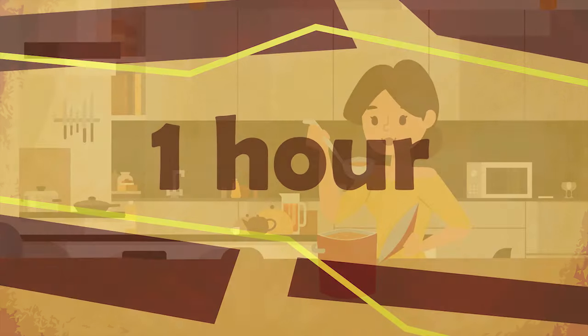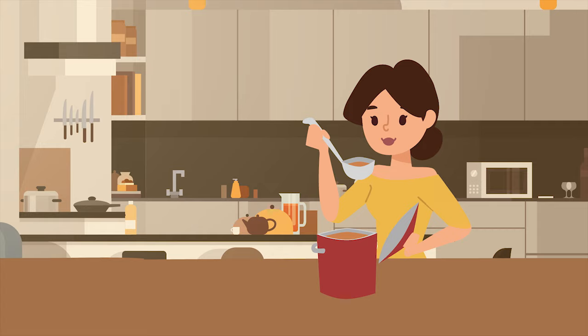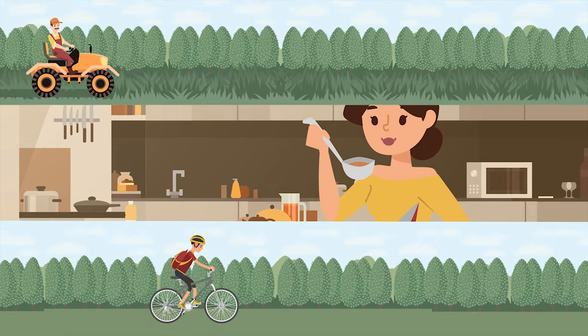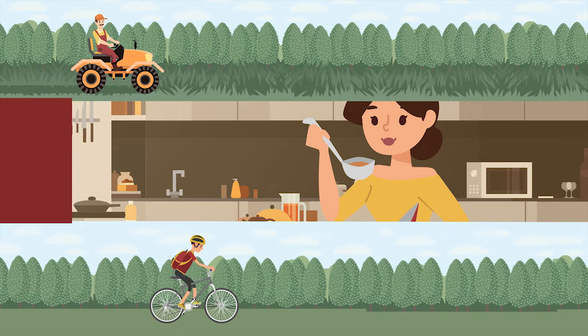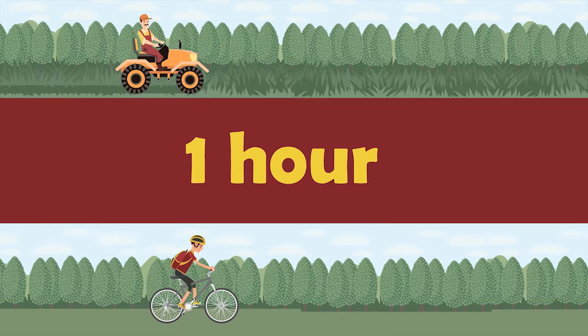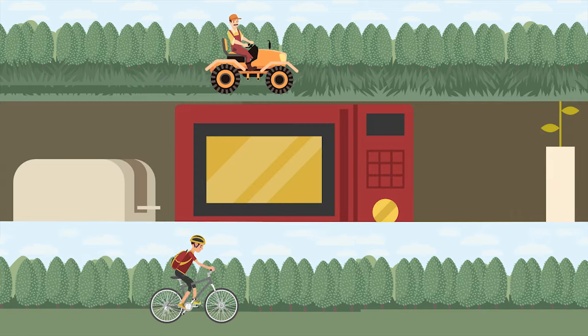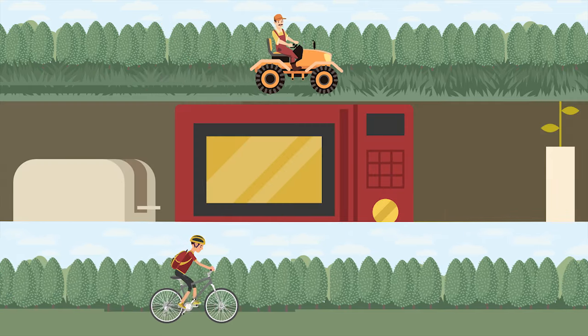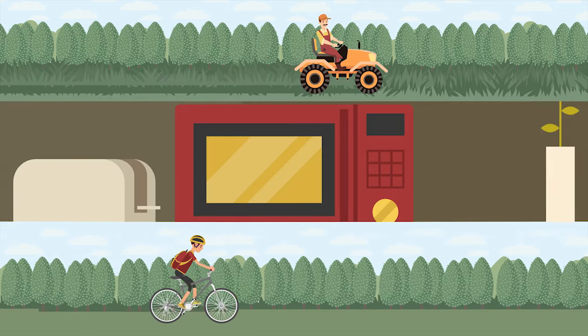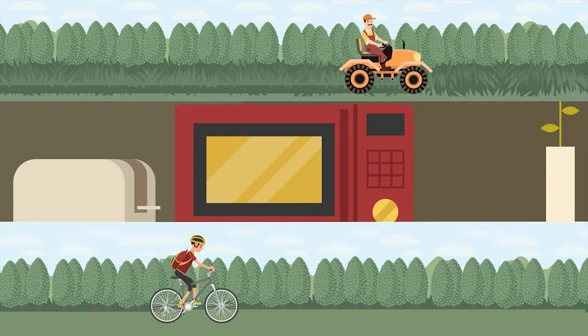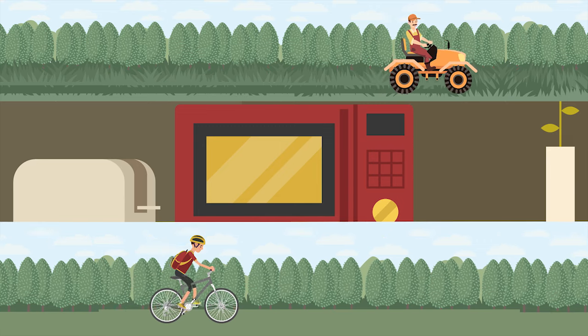Many things can be done in one hour. Cooking a meal, taking a bike ride, or mowing the lawn can take about an hour. Of course, some meals, bike rides, and lawns may take less than or greater than an hour to complete.